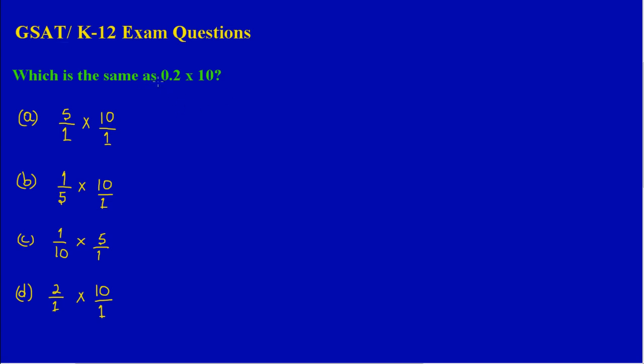In this lesson we're asked which is the same as 0.2 times 10. Here we are given a couple of options. We have option A: 5 over 1 times 10 over 1, B: 1/5 times 10 over 1, C: 1 over 10 or 1 tenth times 5 over 1.